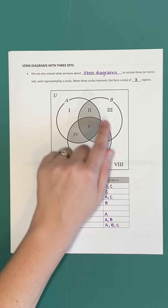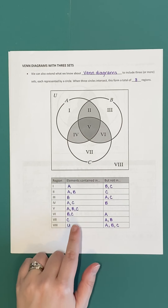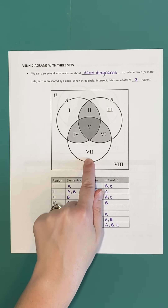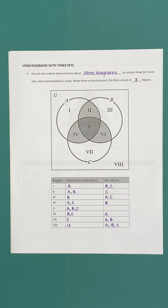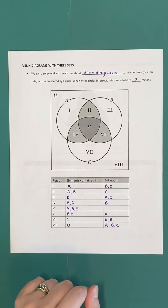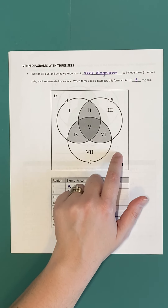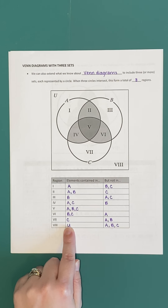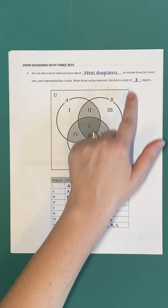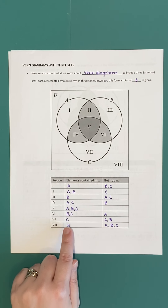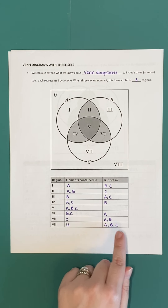Region VIII is outside all three circles but still inside the diagram — these are elements in the universal set that weren't grouped into any of the subsets A, B, or C. Don't forget this region: the rectangle represents the universal set, and there can be elements that didn't make it into any circle but are still under consideration in the context of the problem.